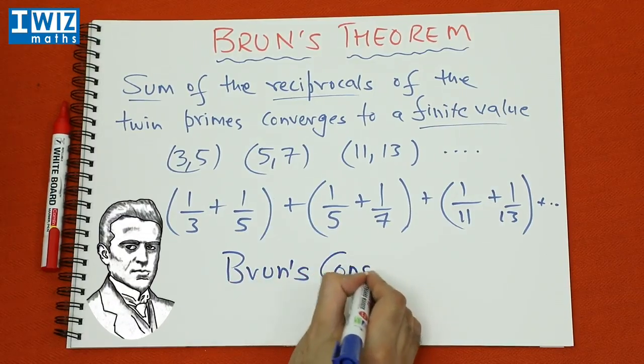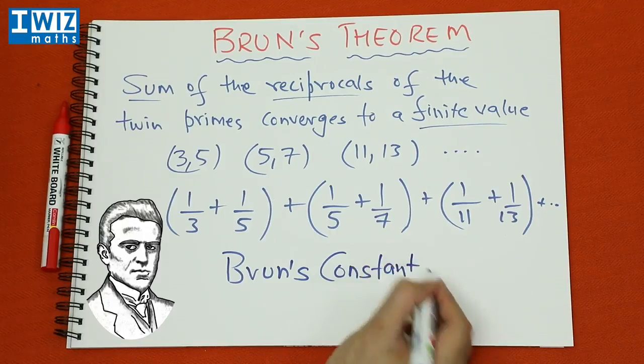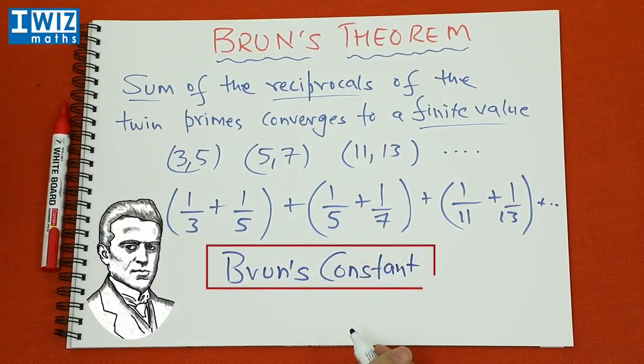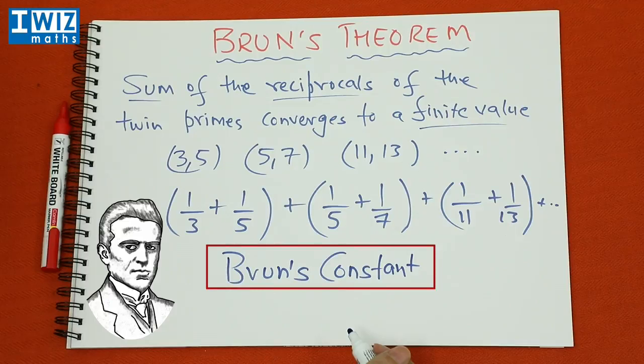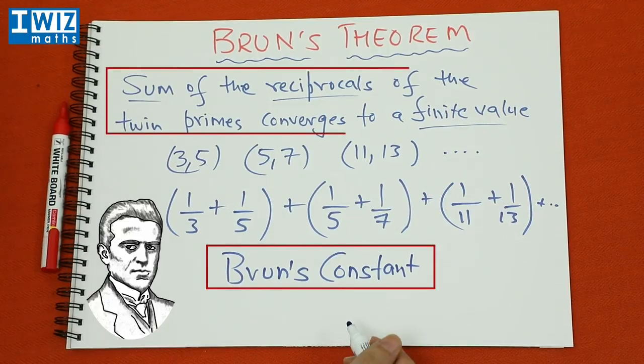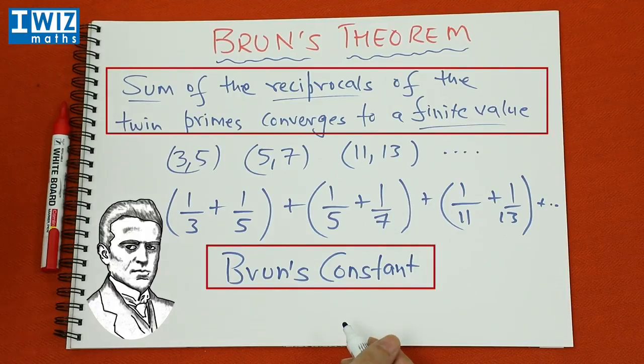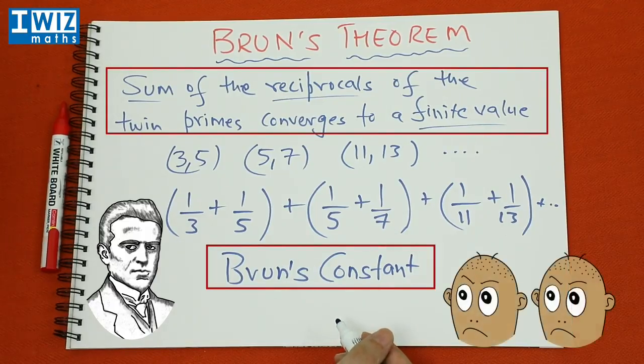So that's a really fascinating property of twin primes where the sum of the reciprocals of the twin primes converges to a finite value and that value is now known as Brun's constant.